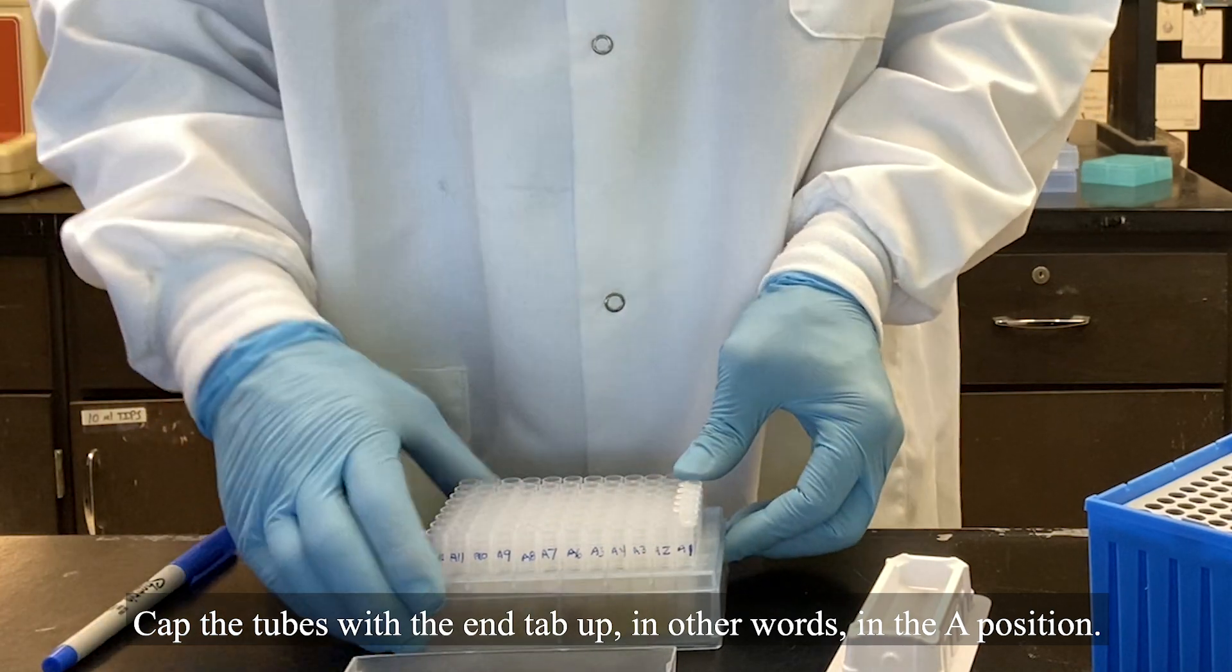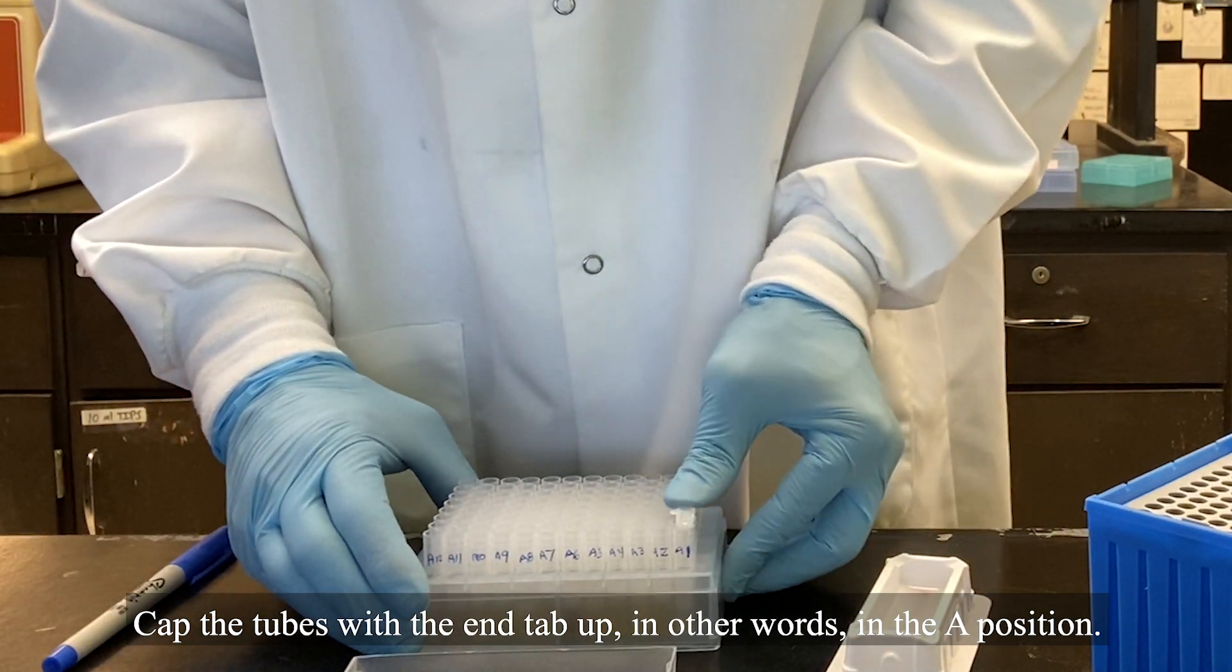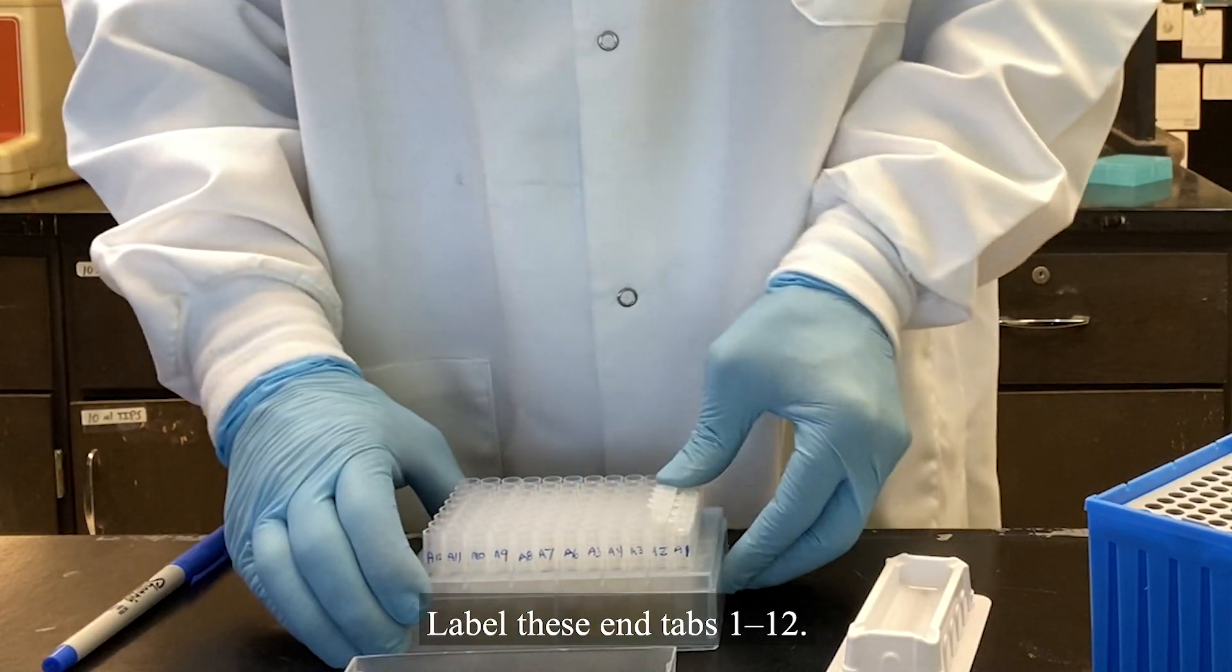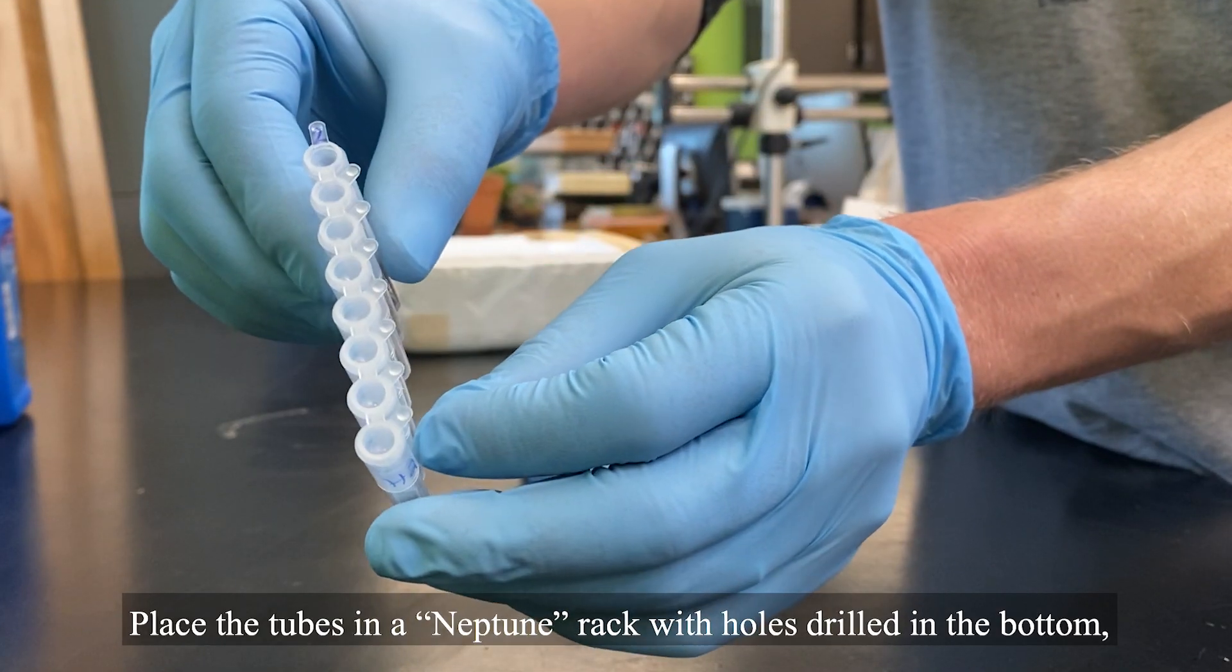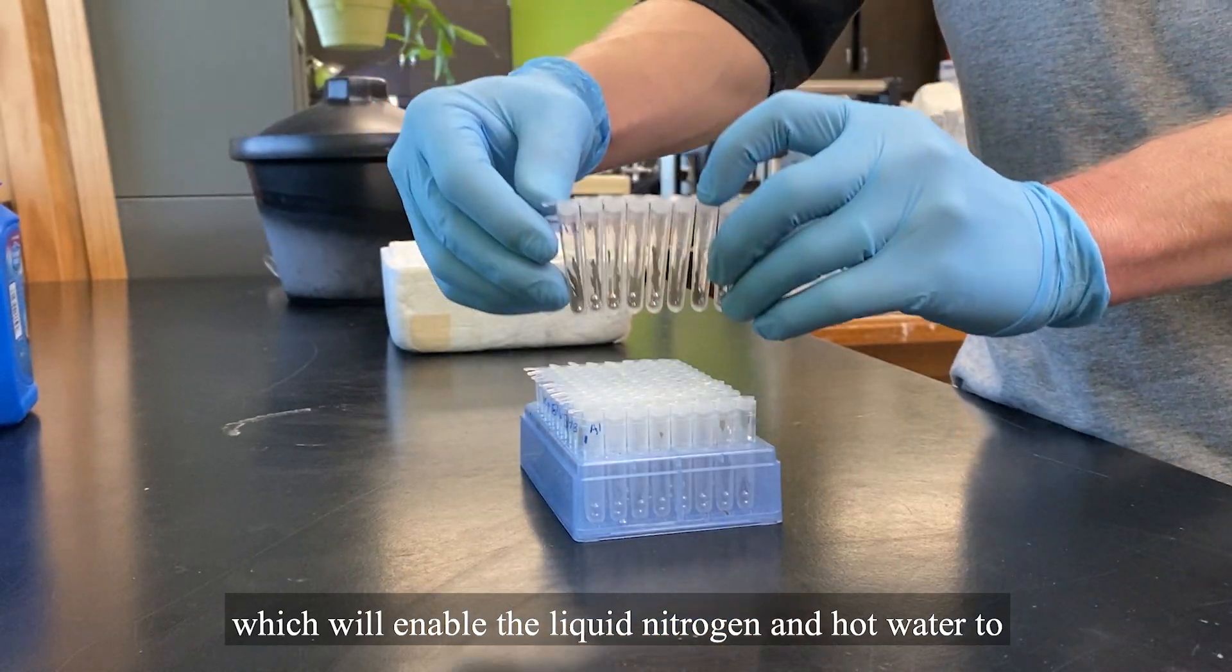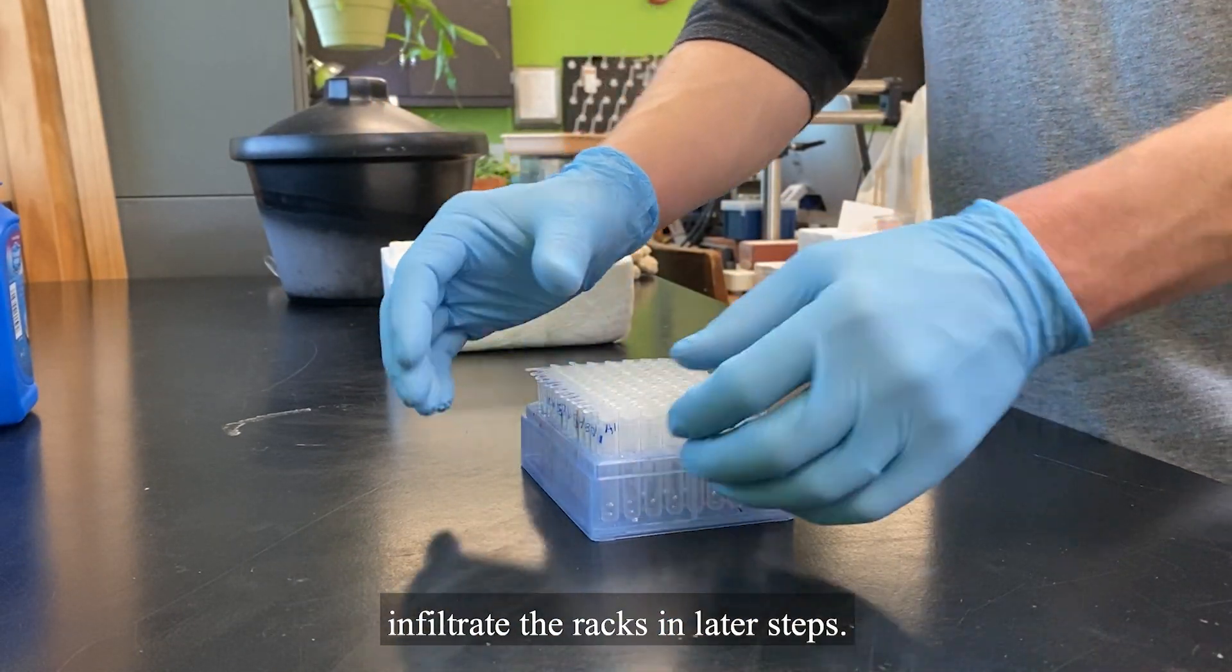Cap the tubes with the end tab up, in other words, in the A position. Label these end tabs 1 to 12. Place the tubes in a Neptune rack with holes drilled in the bottom, which will enable the liquid nitrogen and hot water to infiltrate the racks in later steps.